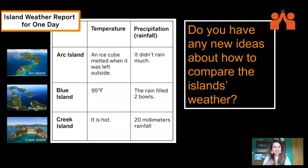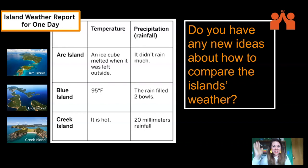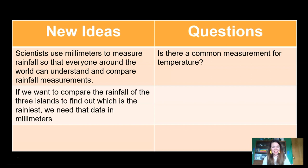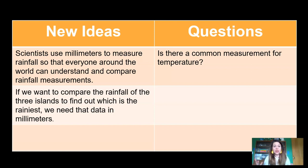Thinking back to those three island data from the email earlier, do you have any new ideas about how to compare the islands' weather? Remember that we're investigating this question: How can meteorologists describe weather in a way that helps them make comparisons? Here are my new ideas from today's lesson: Scientists use millimeters to measure rainfall so everyone around the world can understand and compare rainfall measurements. And if we want to compare the rainfall of the three islands to find out which one is the rainiest, we need that data in millimeters.